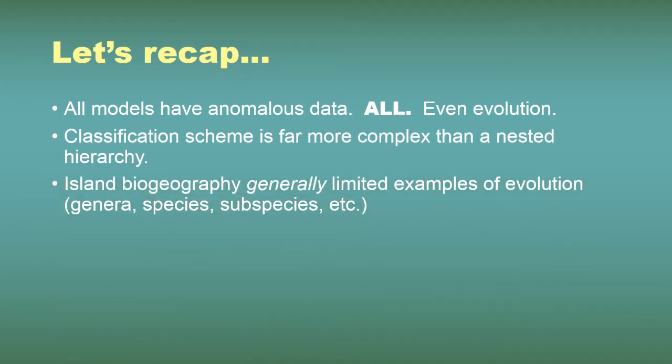I also noted that island biogeography, the thing that really clinched evolution in the mind of Darwin, is generally, and I mean generally, not always, but generally limited to examples of evolution that are limited. Things like unique genera, unique species, unique subspecies are on islands. Even though there are some islands that have been around for millions of years, according to the conventional timescale, you still have very limited examples of evolutionary change, which I don't really have a problem with. But the question is, does this, if we extrapolate, does that really explain everything?